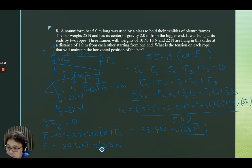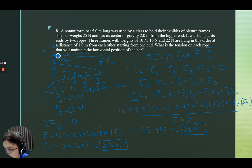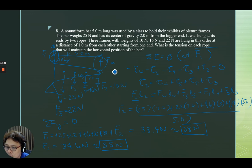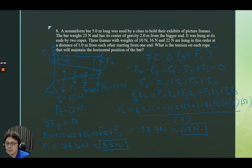So these are the forces exerted by each rope: F1 is 35 newtons, and F2 is 38 newtons. F2 is larger because more of the weights are on that side.